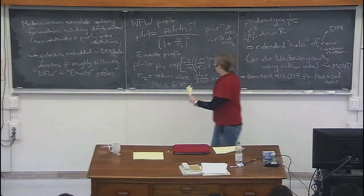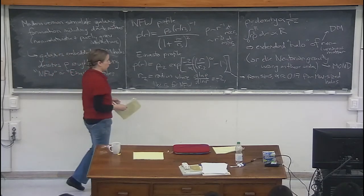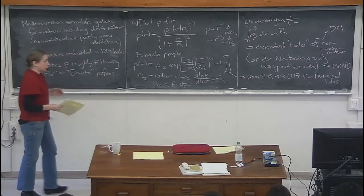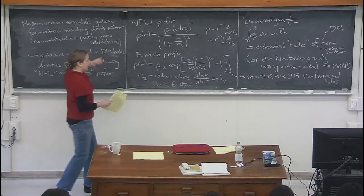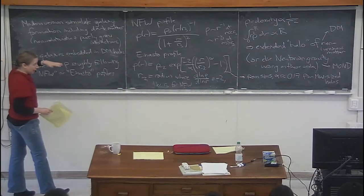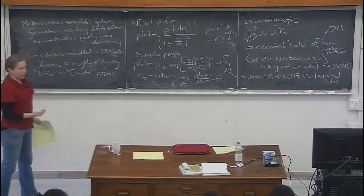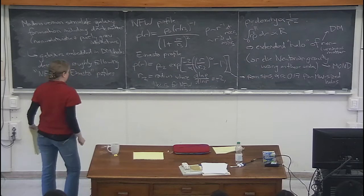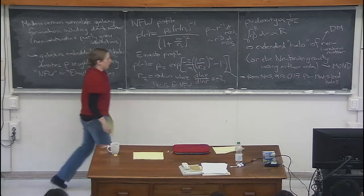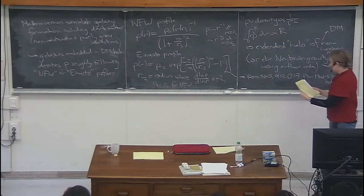The Einasto profile similarly has an evolution, where rho-minus-two and r-minus-two denote the radius at which the logarithmic slope of the profile is two — i.e., the radius at which rho goes like one over r squared, analogous to the scale radius for NFW. Empirically, the parameter alpha is adjustable and depends on the size of the galaxy. From simulations, alpha is about 0.17 for Milky Way-sized halos. These profiles correspond to a scale radius of about 20 kiloparsecs for the Milky Way — a bit further out than our location.